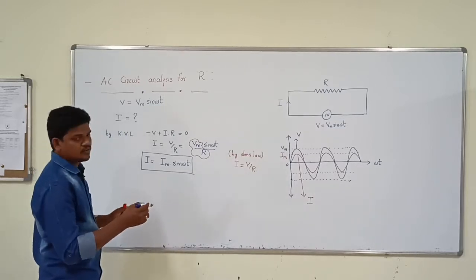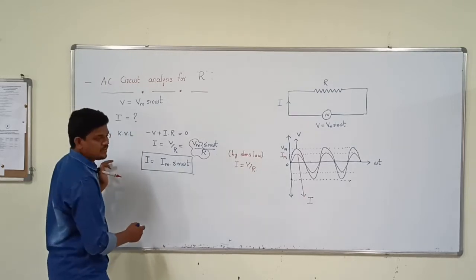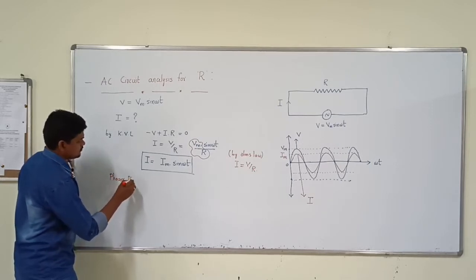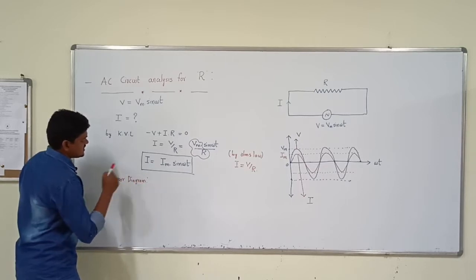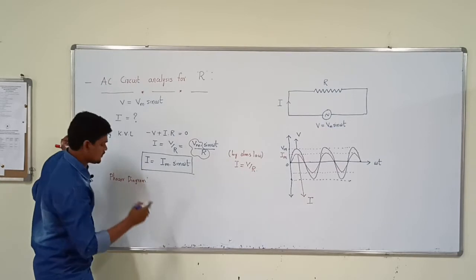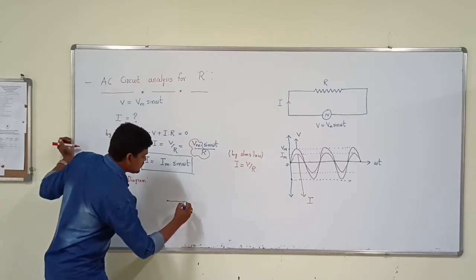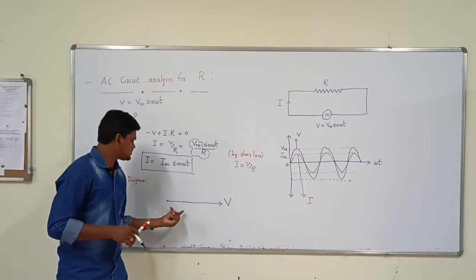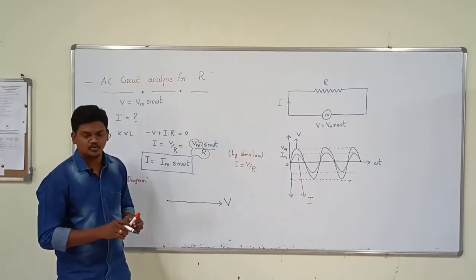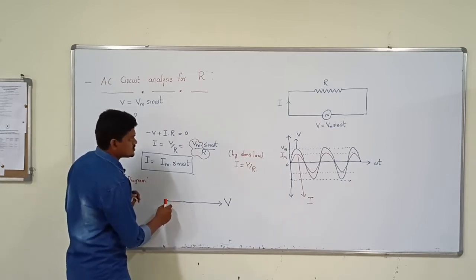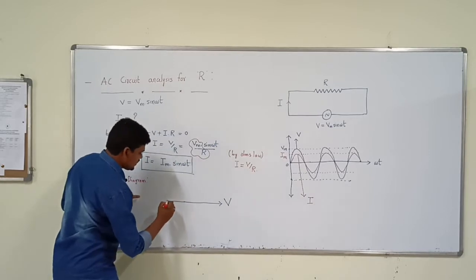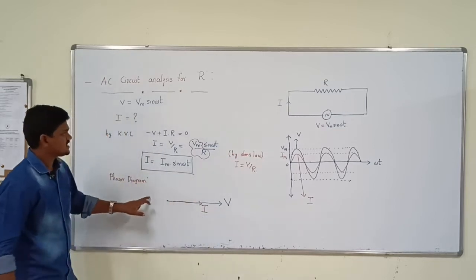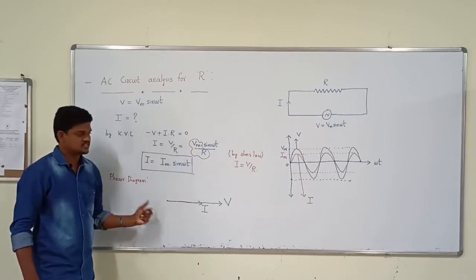Now we will write the phasor diagram for the resistor — voltage and current. In the phasor diagram for this single phase resistor, I am considering voltage as reference because it starts at 0. This is the applied voltage as a straight line representing its magnitude. Im is also starts from 0 but the magnitude is less. This is the phasor diagram of the single phase AC supply given to the resistor.